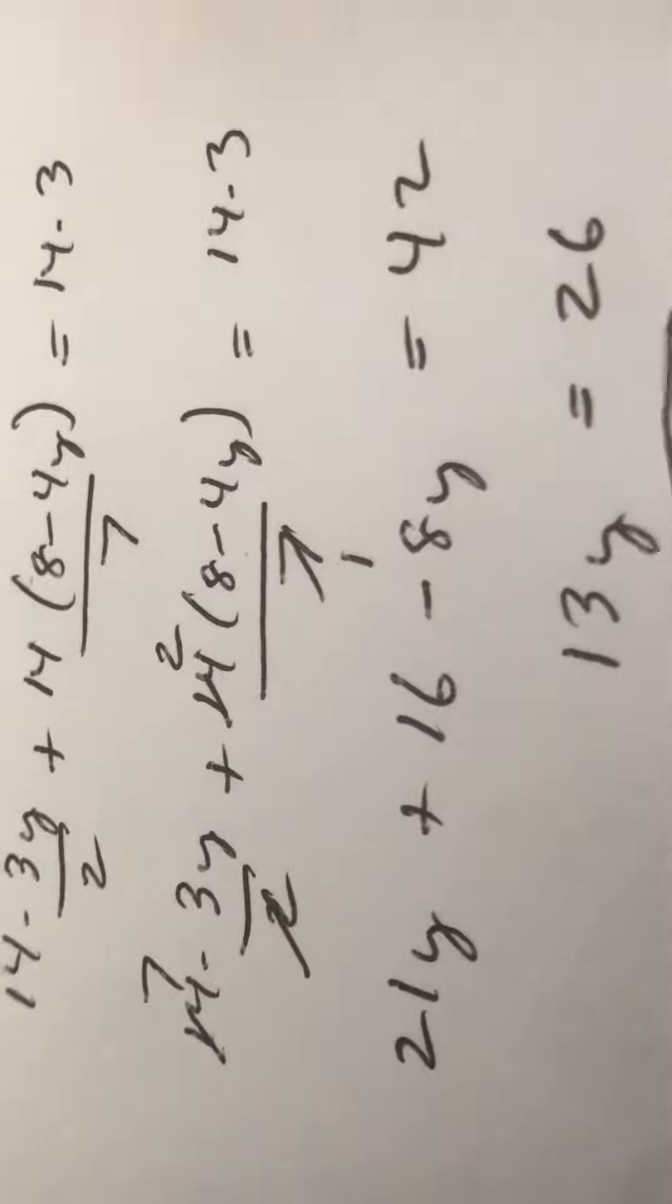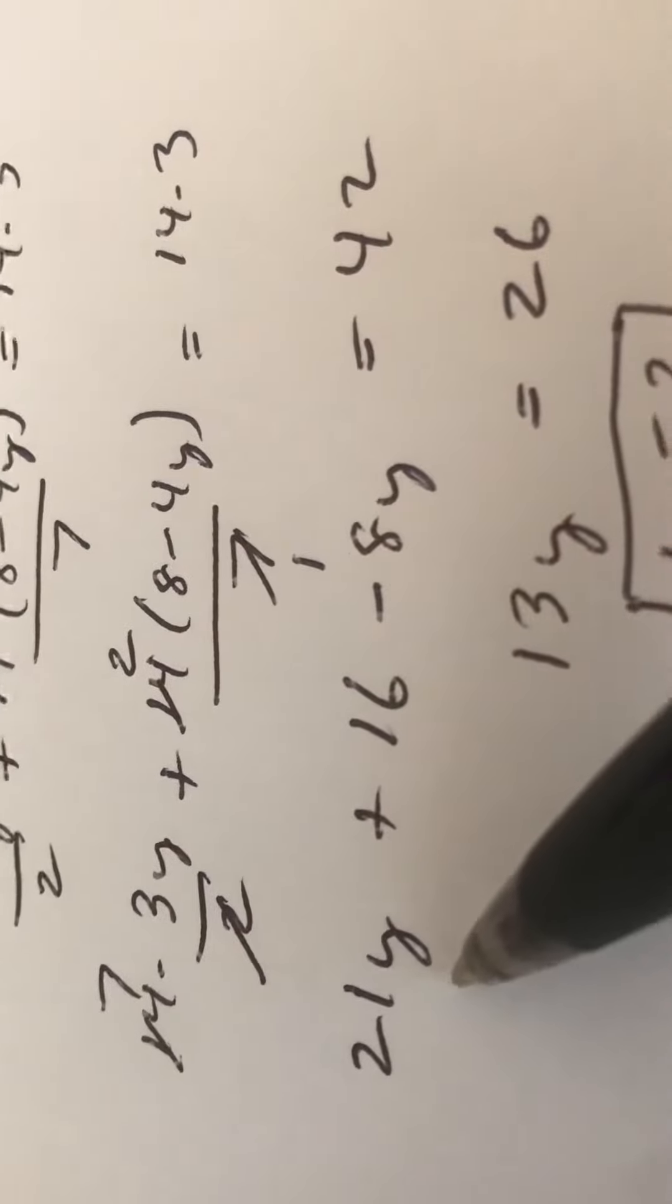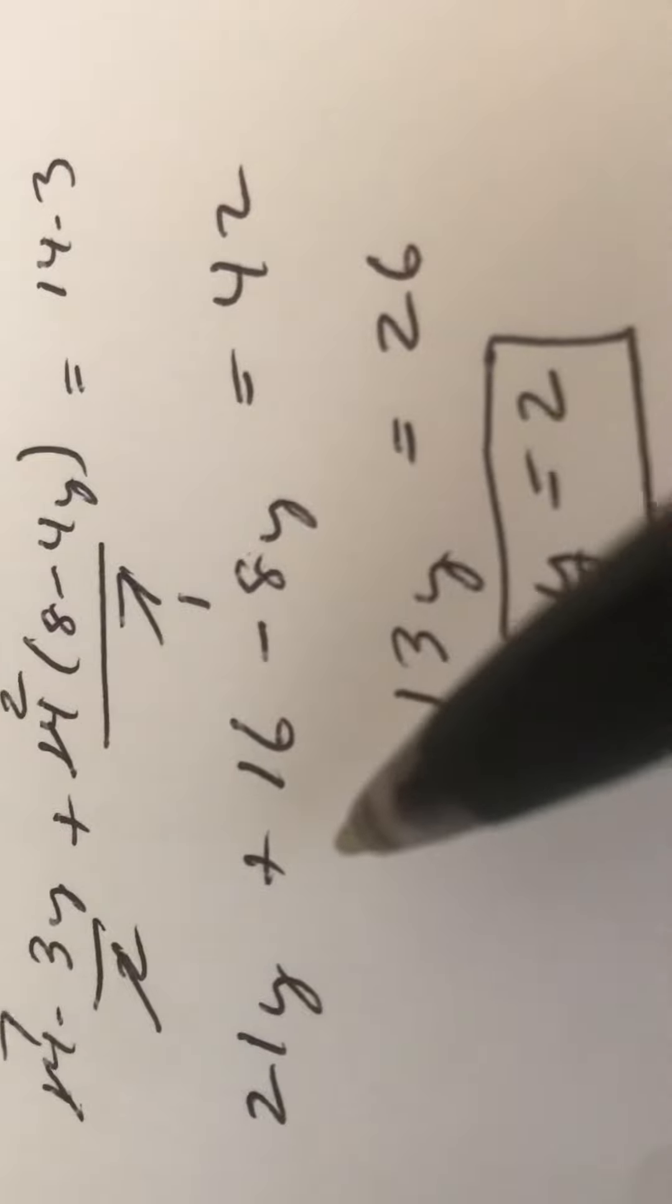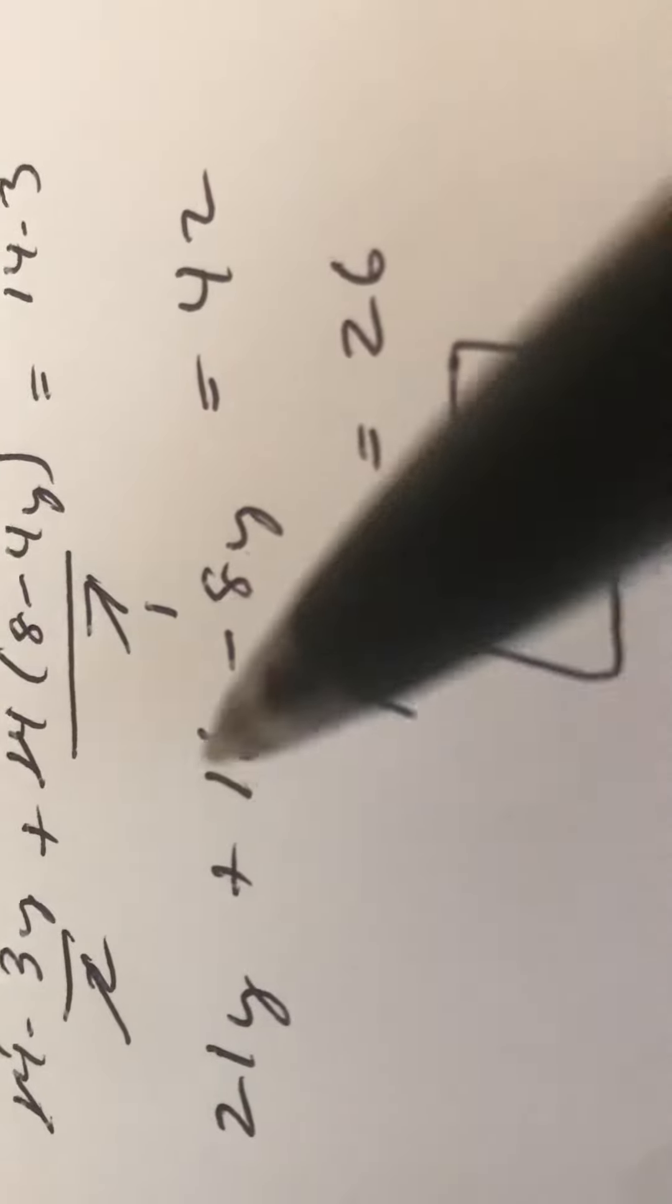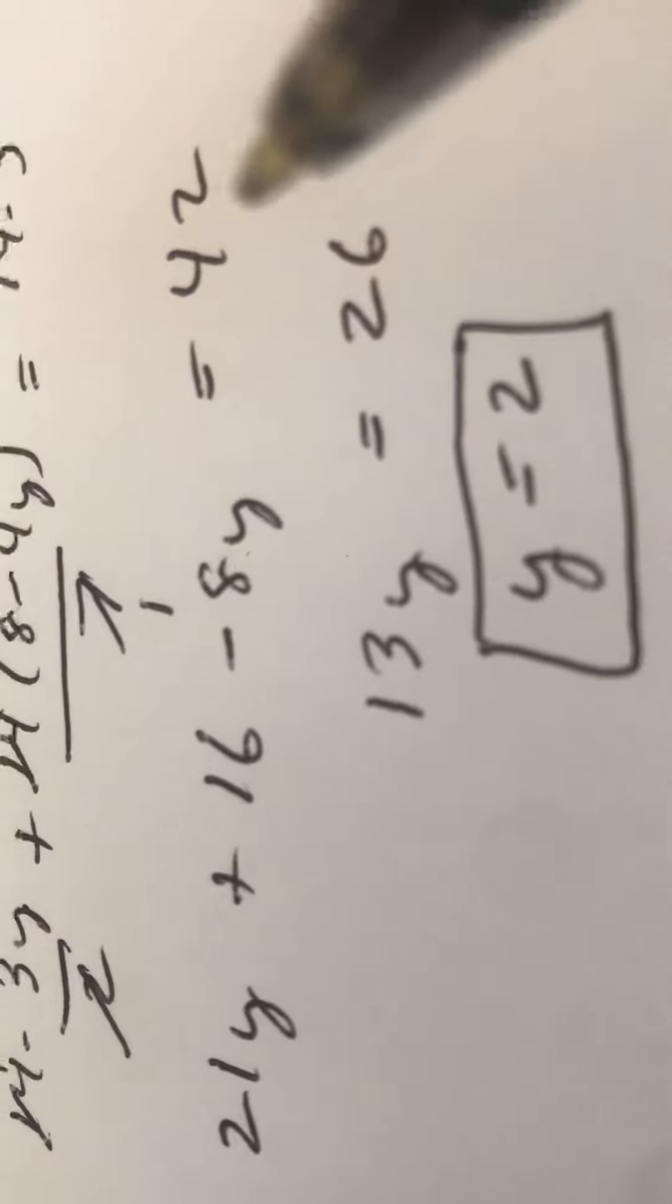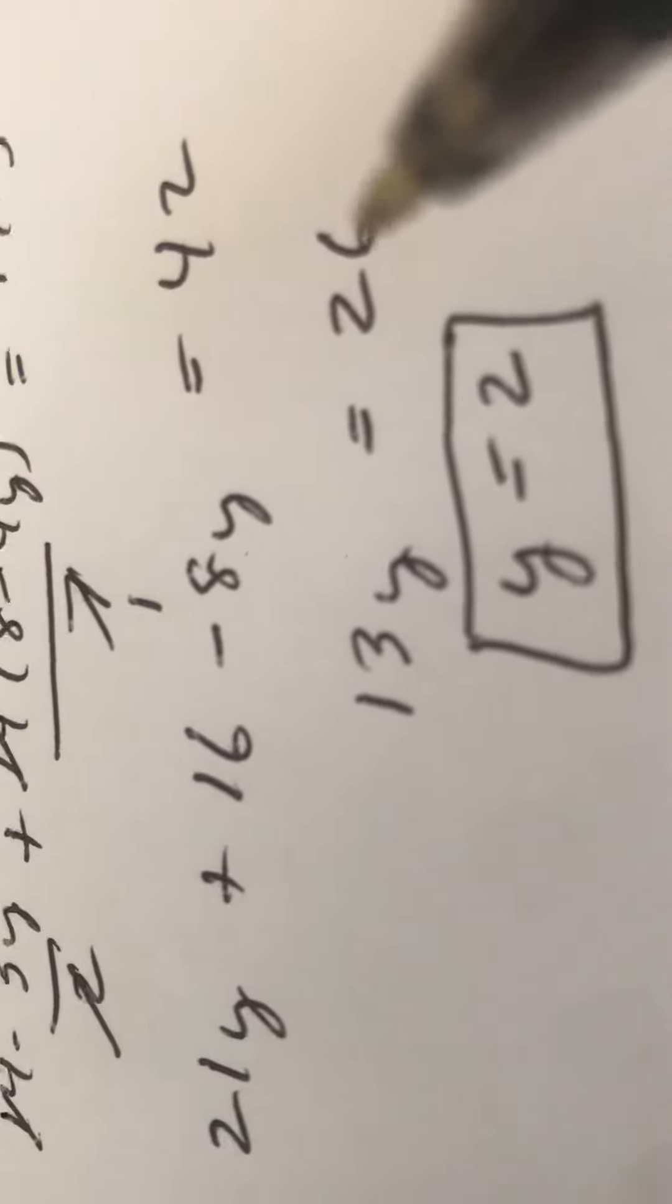Now I can do sort of things mentally at this stage. 21y minus 8y is 13y, and then I subtract 16 from this side, makes it disappear. And I subtract 16. 42 minus 10 is 32, minus another 6 is 26.